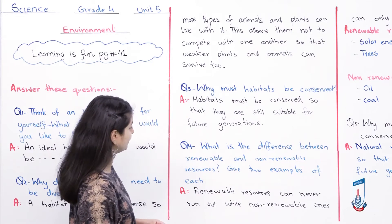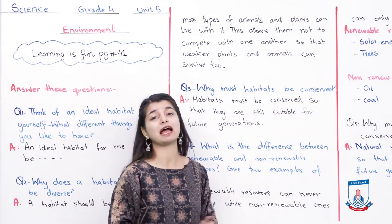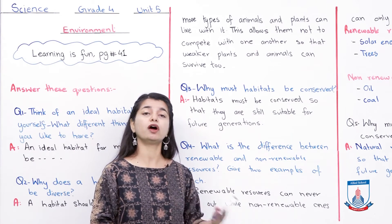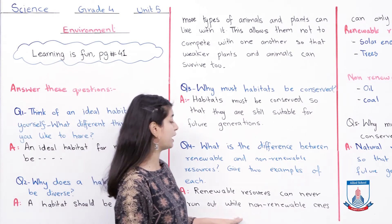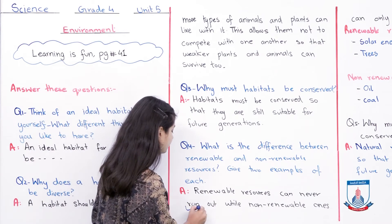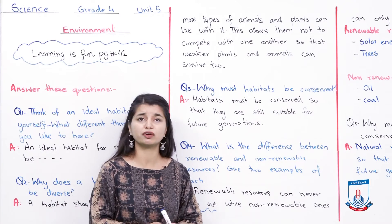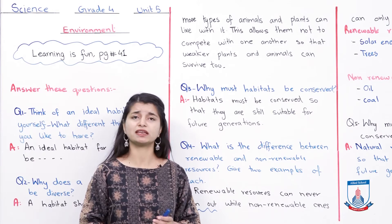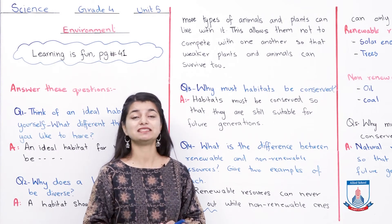Question number four: What is the difference between renewable and non-renewable resources? Give two examples of each. Renewable resources can never run out. You can't do anything — it's never going to be finished. Like the sun — if you use it, it will not be finished. It can be used again and again. This is an example of a renewable resource.